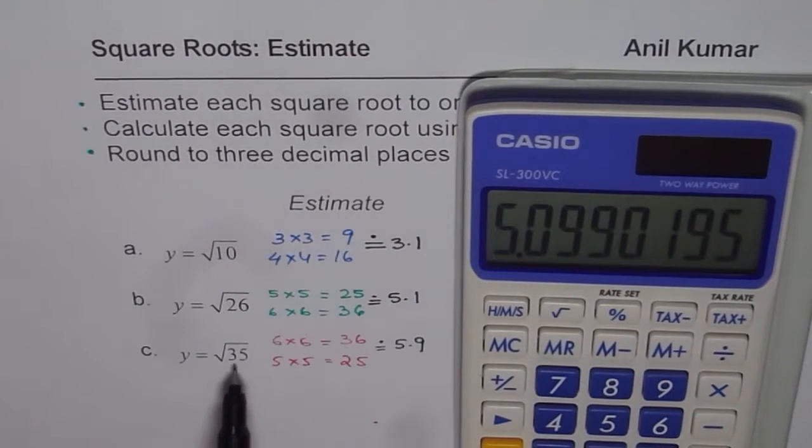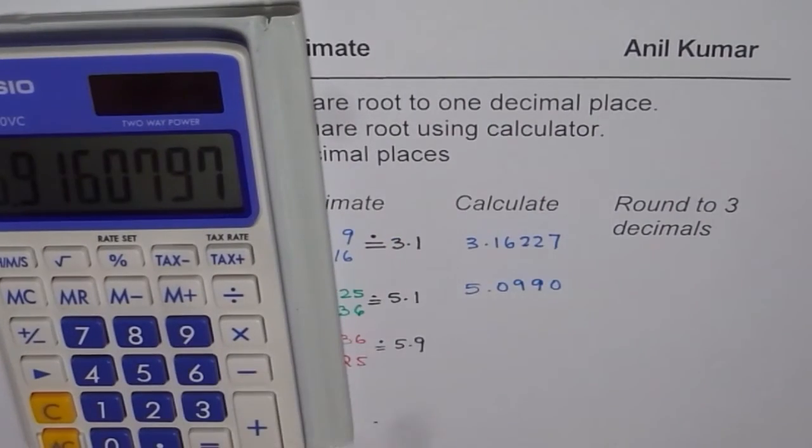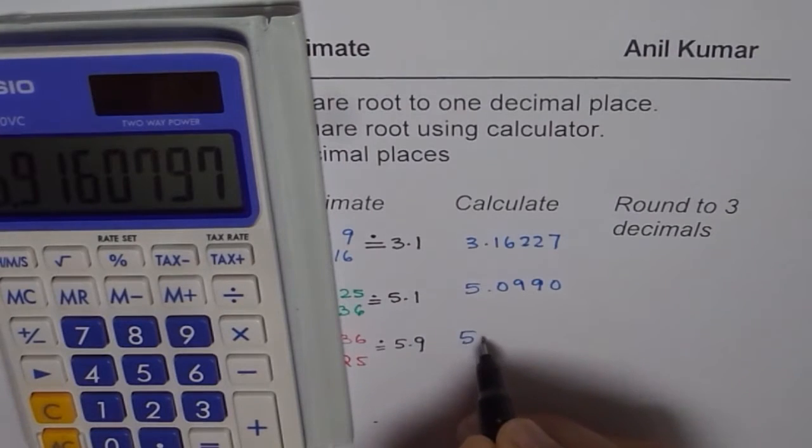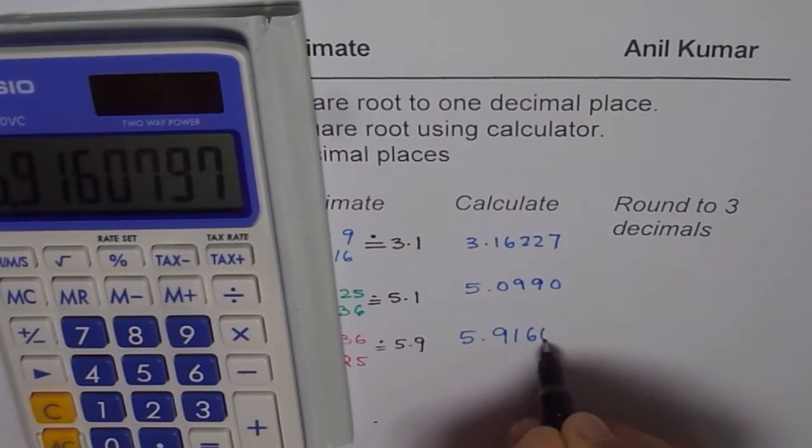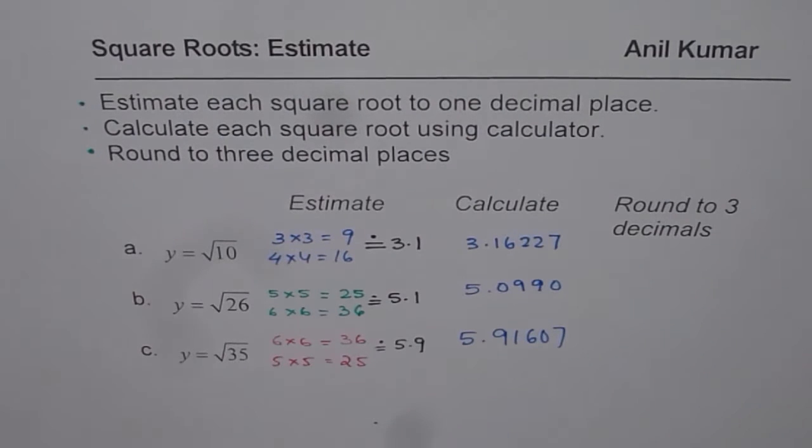Let us calculate square root of 35. Press 35 and then square root. You get 5.91607. Take more than 3 decimal places so that you can round to 3 decimal places.